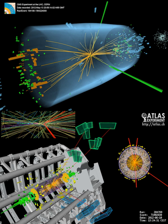The Higgs boson is an elementary particle in the standard model of particle physics, produced by the quantum excitation of the Higgs field, one of the fields in particle physics theory. It is named after physicist Peter Higgs, who in 1964, along with five other scientists, proposed the mechanism which suggested the existence of such a particle.